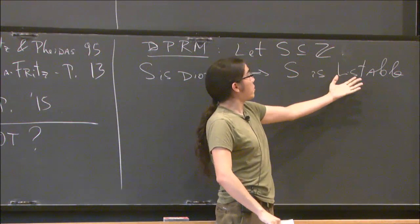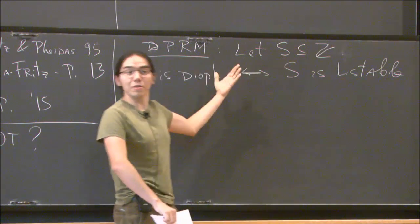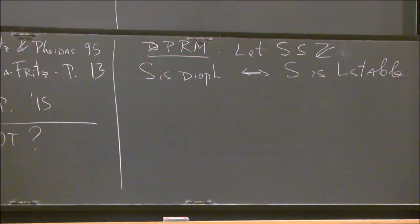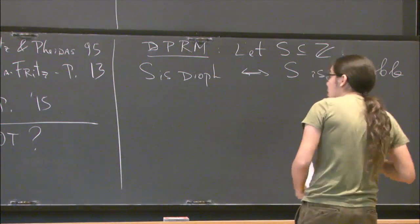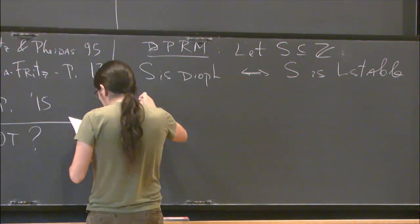And as an exercise, you can try to—well, primes are listable. Try to find the equation, right? So this is the theorem. And from here, and some diagonal argument, the undecidability follows. And this is not the end of the story by any means.